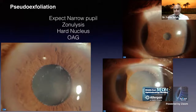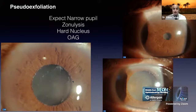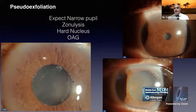Pseudoexfoliation is very common in our region. You should look for it in older patients because you can expect a narrow pupil difficult to dilate, zoniolysis, and a hard nucleus. Modify the infusion height and use techniques that minimize stress on the zonules. You can also expect preoperative or postoperative open-angle glaucoma. Identify the diagnosis, anticipate intraoperative and postoperative problems, and act accordingly.